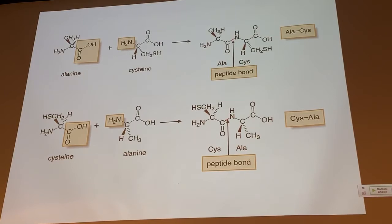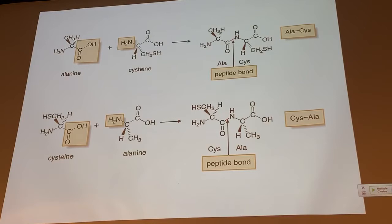The amide bonds that link amino acids are indeed amide bonds — no different from other amide bonds, but they do have a special name. Amide bonds involved in peptides are known as peptide bonds. So when you hear 'peptide bond,' it's just an amide that is linking amino acids together in a peptide chain.